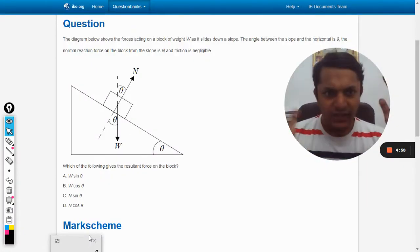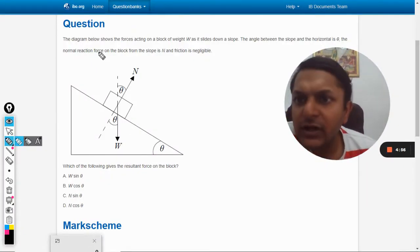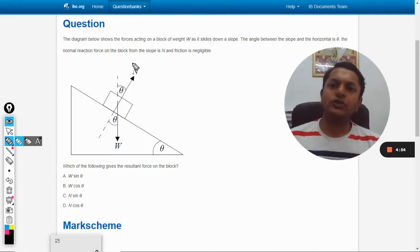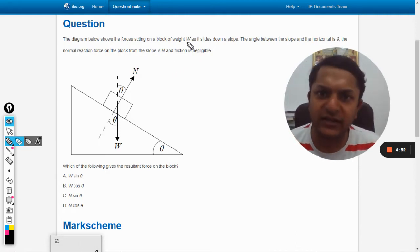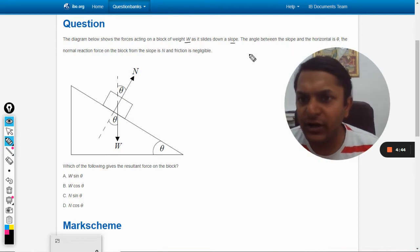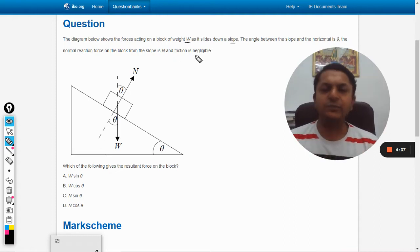Okay, so let us see this question. The diagram below shows the forces acting on a block of weight W as it slides down a slope. The angle between the slope and the horizontal is given to be theta. The normal reaction force on the block from the slope is N and friction is negligible.